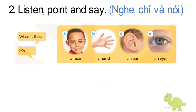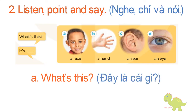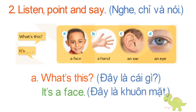Page 28, Lesson 1, Activity 2. Listen, point and say. A. A face. B. A hand. C. An ear. D. An eye. What's this? It's a face.